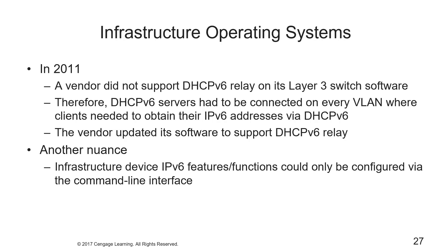Here's an example of another nuance. In 2011 there was a vendor that didn't support DHCPv6 relay on its layer 3 switch software, so DHCPv6 servers had to be connected on every VLAN where clients needed to obtain their v6 addresses via DHCPv6 — not a practical requirement. The vendor later updated its software to support DHCPv6 relay. Another nuanced example was when a vendor's infrastructure device supported v6 but its v6 features and functions could only be configured by the CLI and not its GUI.